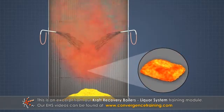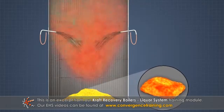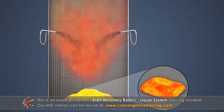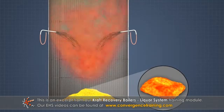Next, the remaining char — which is mostly carbon and sodium compounds — falls onto the smelt bed, where the char burns off, leaving the smelt.